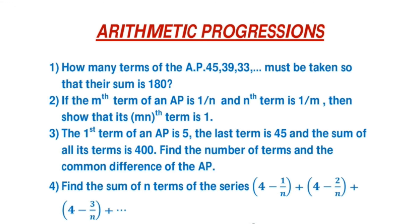In question 2, the Mth term and Nth term are given — show that the M×Nth term equals 1. Write down the formula for the Mth and Nth terms, then simplify. In question 3, find the number of terms and common difference when the first term, last term, and sum of all terms are given. In question 4, find the sum of the series 4 − 1/n + 4 − 2/n + 4 − 3/n + … up to n terms by identifying the first term and common difference, then applying the sum formula.